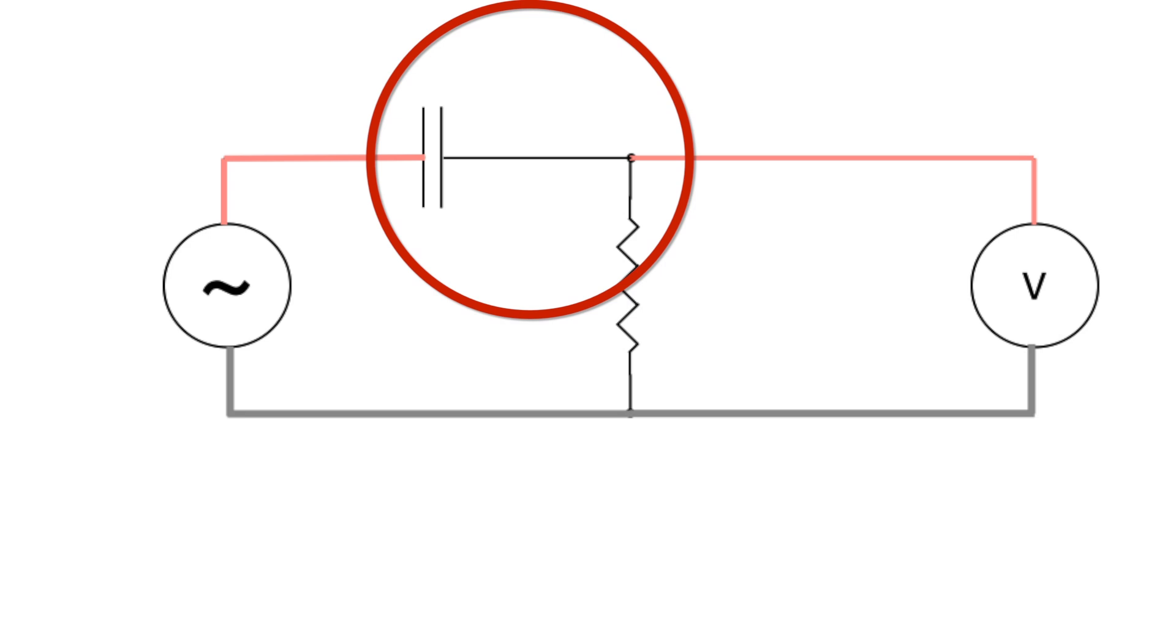And so finally, we look at our diagram and we see there's only one part left that we haven't connected. So we need to connect one side of the resistor that has the red cable going to it to the other side of the capacitor that doesn't have a cable going to it.